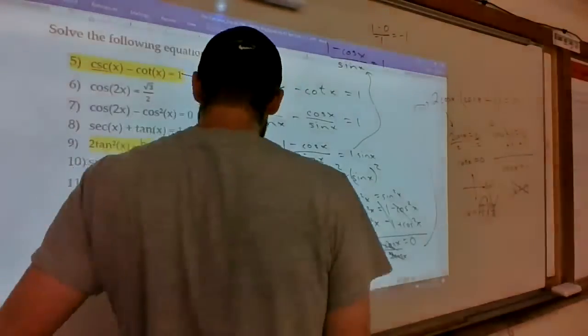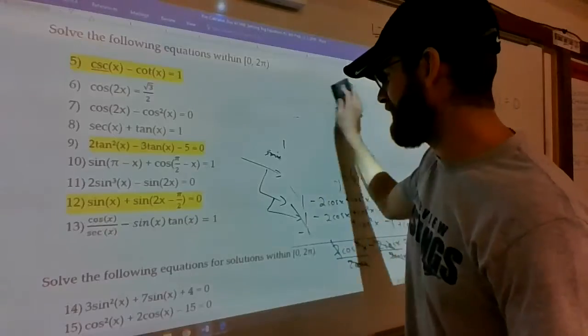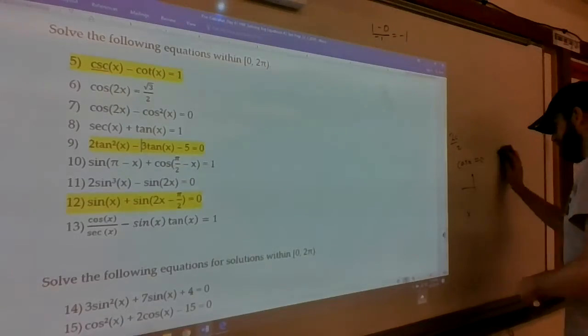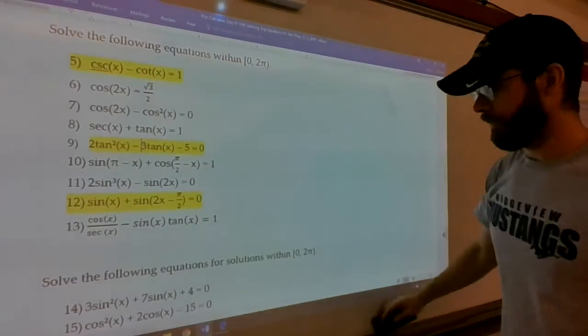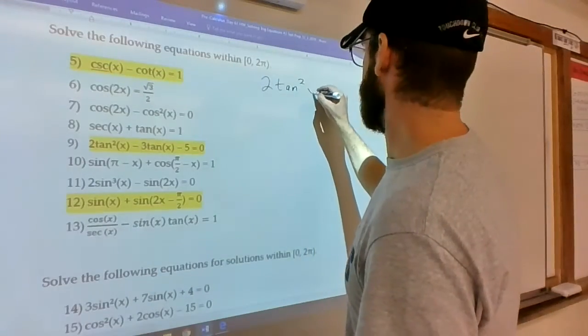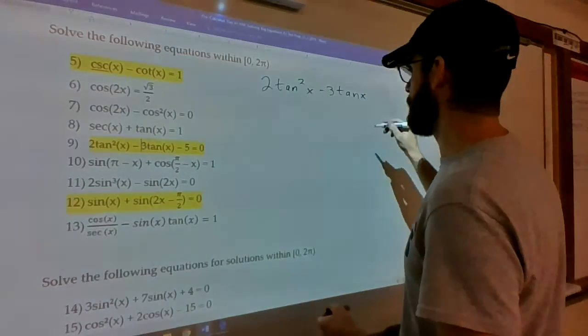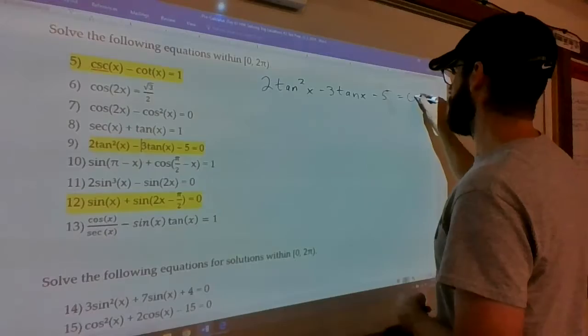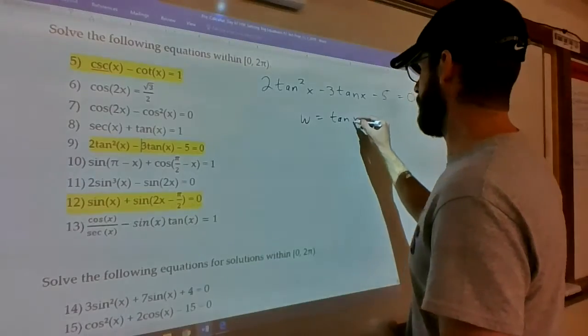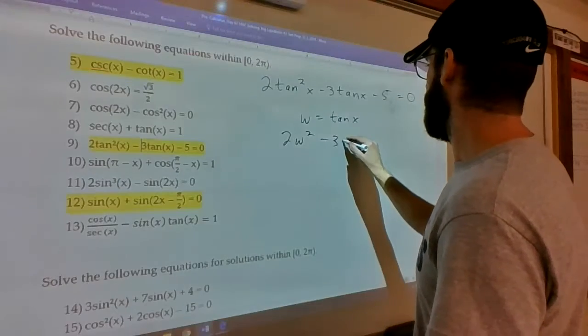Alright, let's check 9. That was a really rich example. There was a lot of stuff that came out of that. Alright, here we're dealing with tangent. And hopefully it's jumping right off the screen that it's a quadratic. I can instantly go to the quadratic formula. If I do this little move, call it 2w² - 3w - 5.